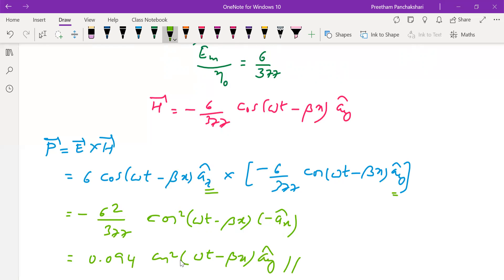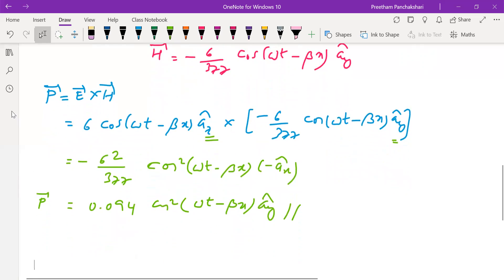It's going to be 0.094 cos²(ωt - βx) â_y. This becomes our instantaneous Poynting vector, and this Poynting vector is a function of time. As the time changes, P changes.